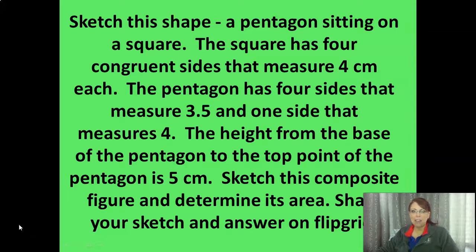It's a sketch this shape, a pentagon sitting on a square. So the key word there is sitting on a square. The square has four congruent sides that measure four centimeters each. Four congruent sides means congruent means equal sides. They are all the same length. So on your square, each side should have been four centimeters long. And then it says the pentagon has four sides that measure 3.5 and one side that measures four. The height from the base of the pentagon to the top point is five centimeters. Sketch it and figure out what the area is. So let's flip over here. I'm going to stop and flip over to my camera and show you how to solve this.